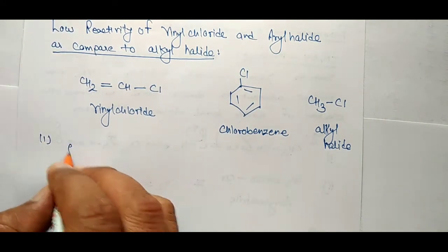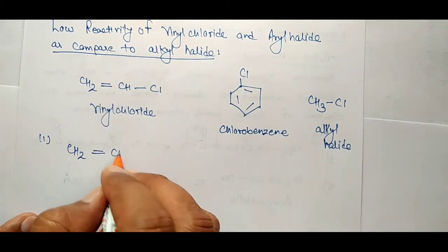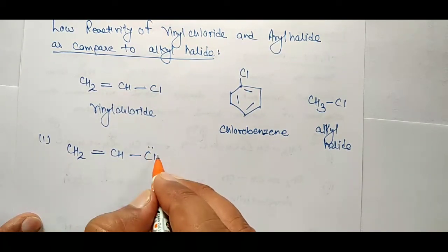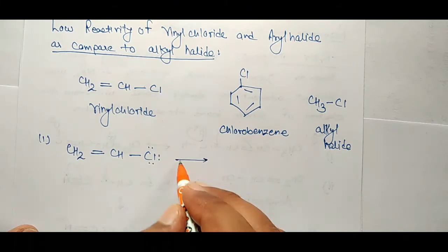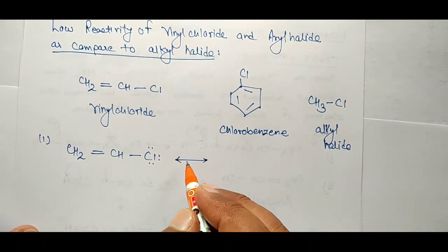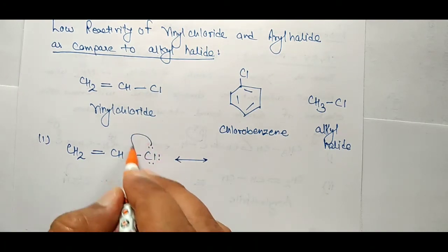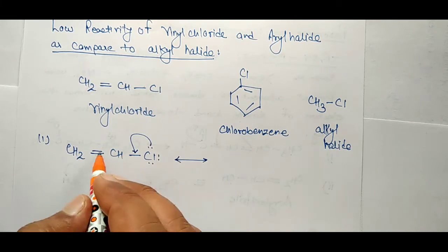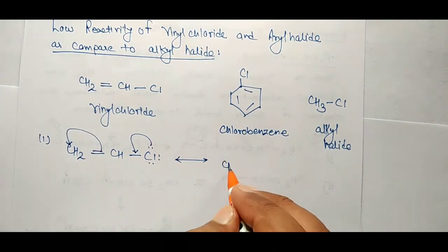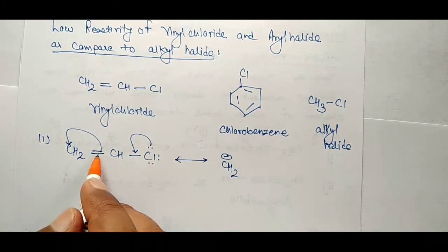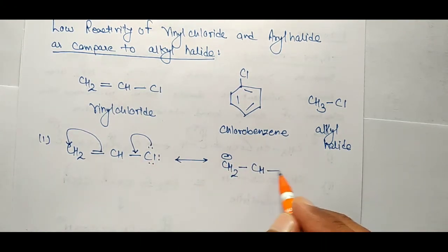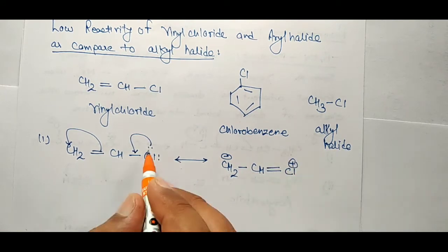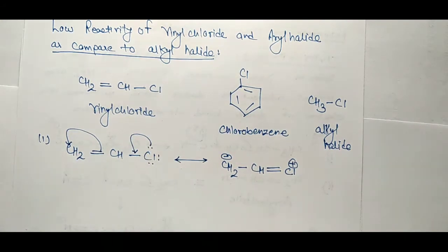Let's start from vinyl chloride: CH2 double bond CH and Cl. You know that chlorine has three lone pairs. These lone pairs take part in delocalization, showing the +M effect. This lone pair donates and takes part in delocalization, and therefore this pi bond will shift — the CH2 will carry a negative charge because the pi electrons have shifted to this carbon atom. Now the C-Cl bond, which was originally a single bond, becomes a double bond.